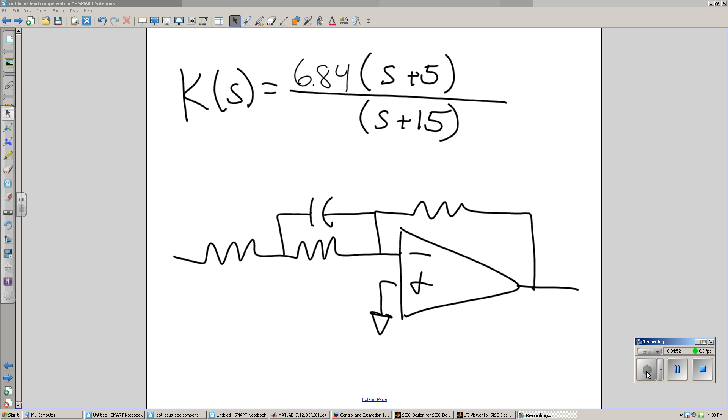If you want to implement that compensator, I've got three constraints. Gain k, zero at minus 5, pole at minus 15. A circuit to build the lead compensator, as shown, I've got four degrees of freedom. With four degrees of freedom and three constraints, something's arbitrary. So arbitrarily, let's make that a 1 meg resistor.